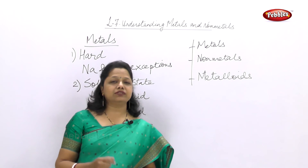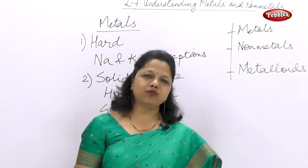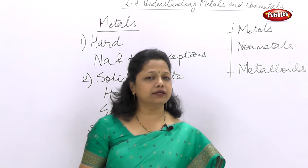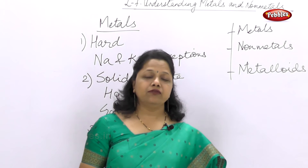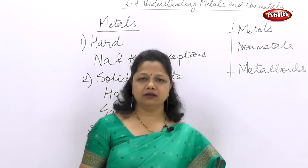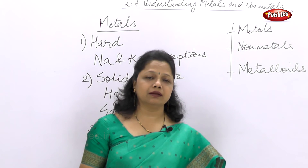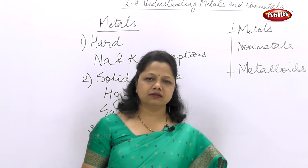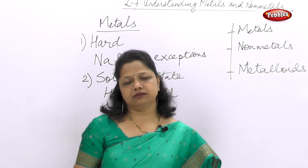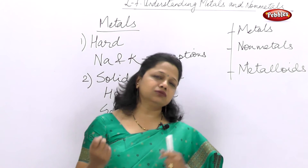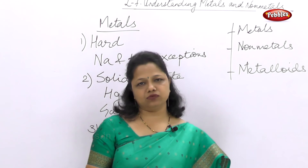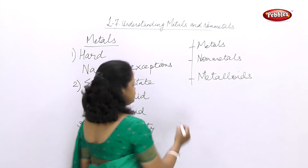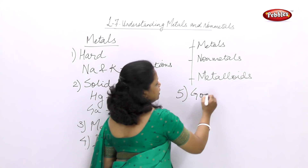The fifth property is whether metals are good conductors of heat and electricity. We use copper wires in electric circuits, which means copper passes electric current and is a good conductor of electricity. A conductor is a substance which allows heat and electricity to pass through it. So the fifth property identifying a metal is that it is a good conductor of heat and electricity.